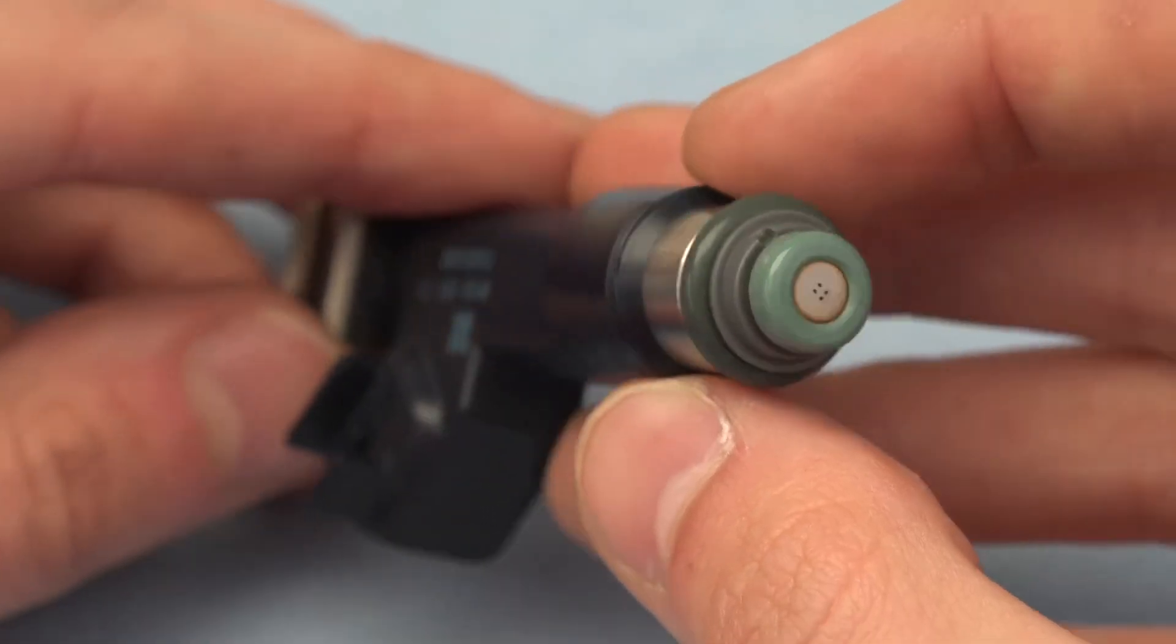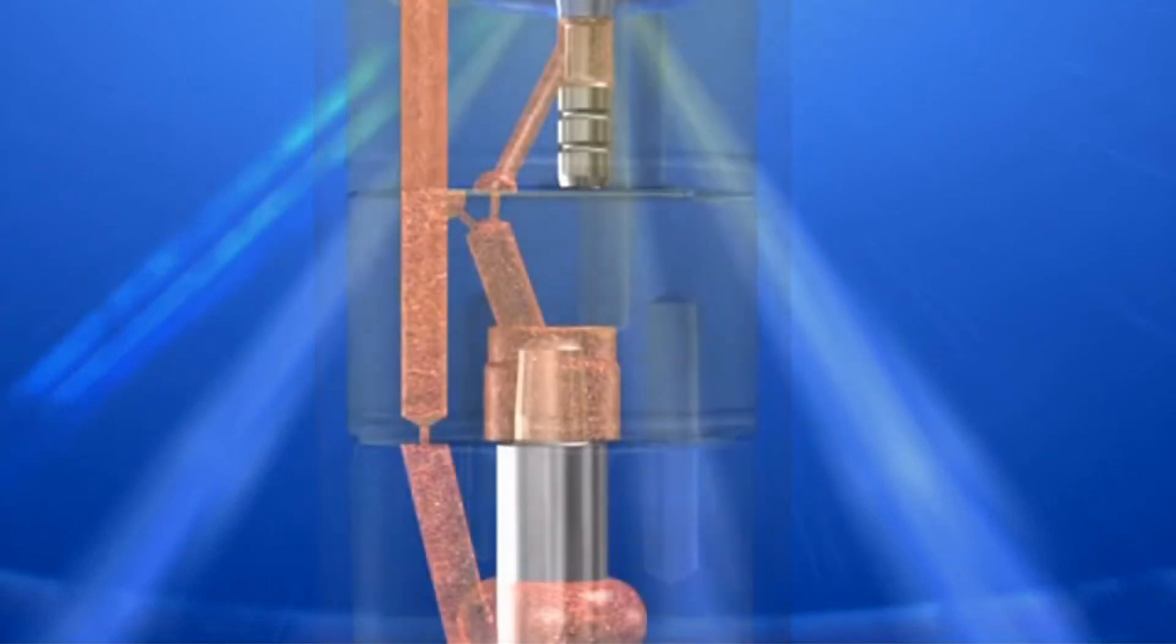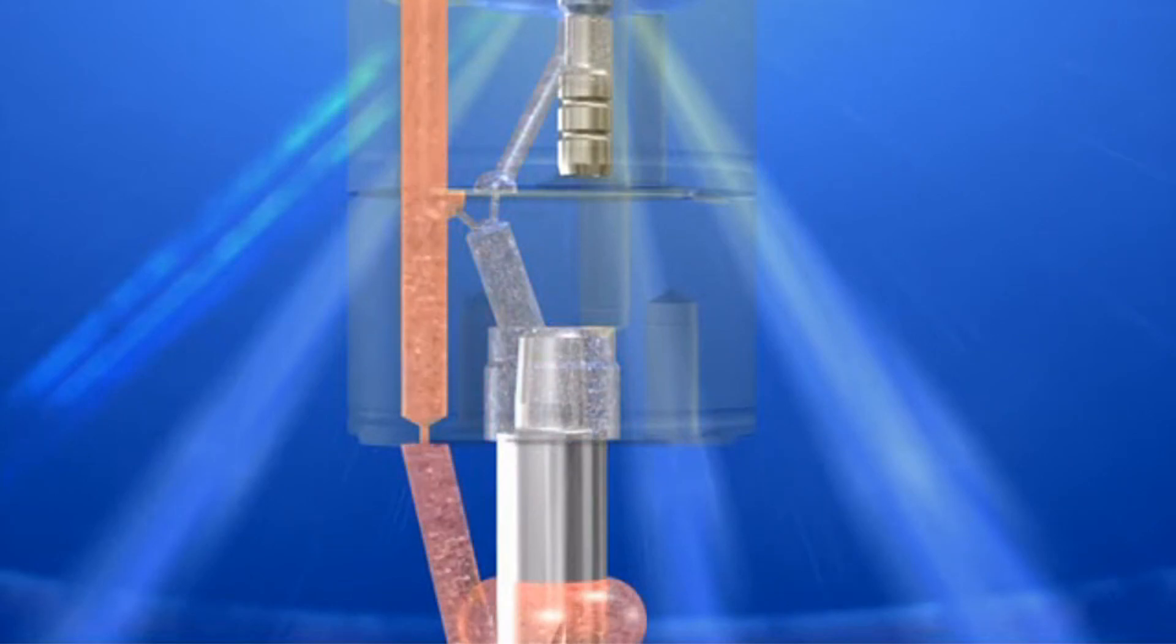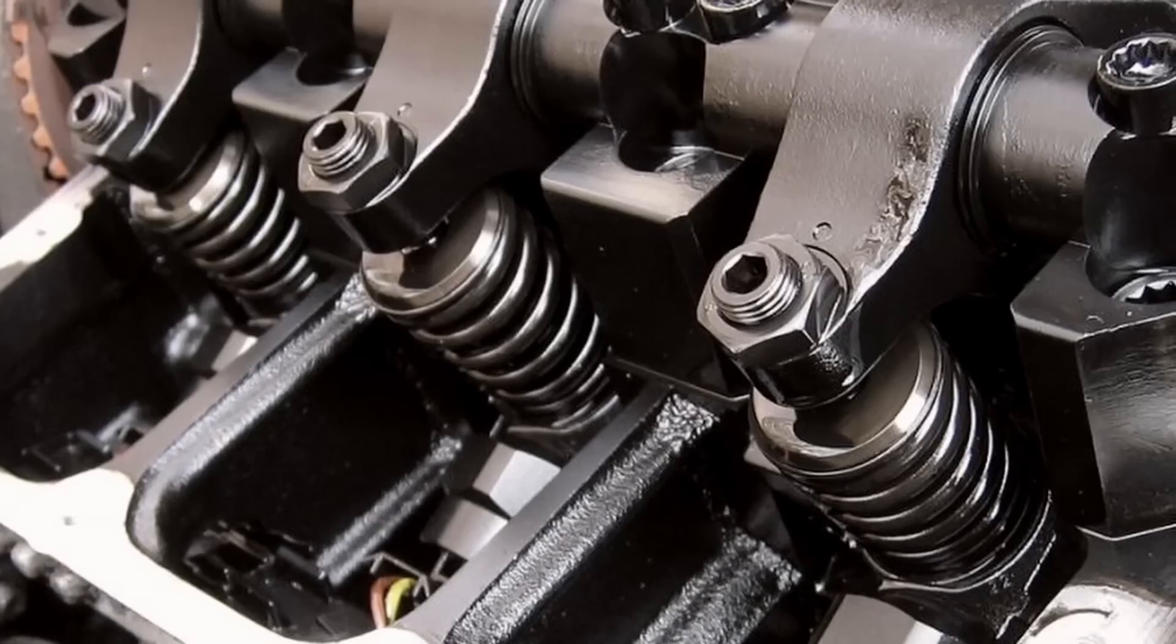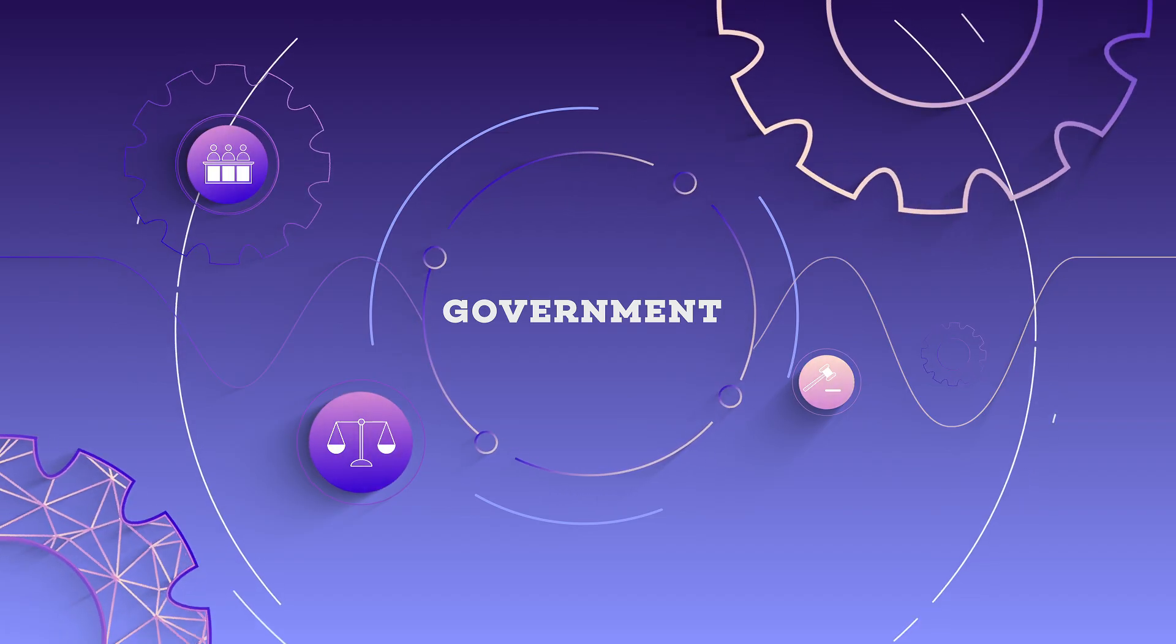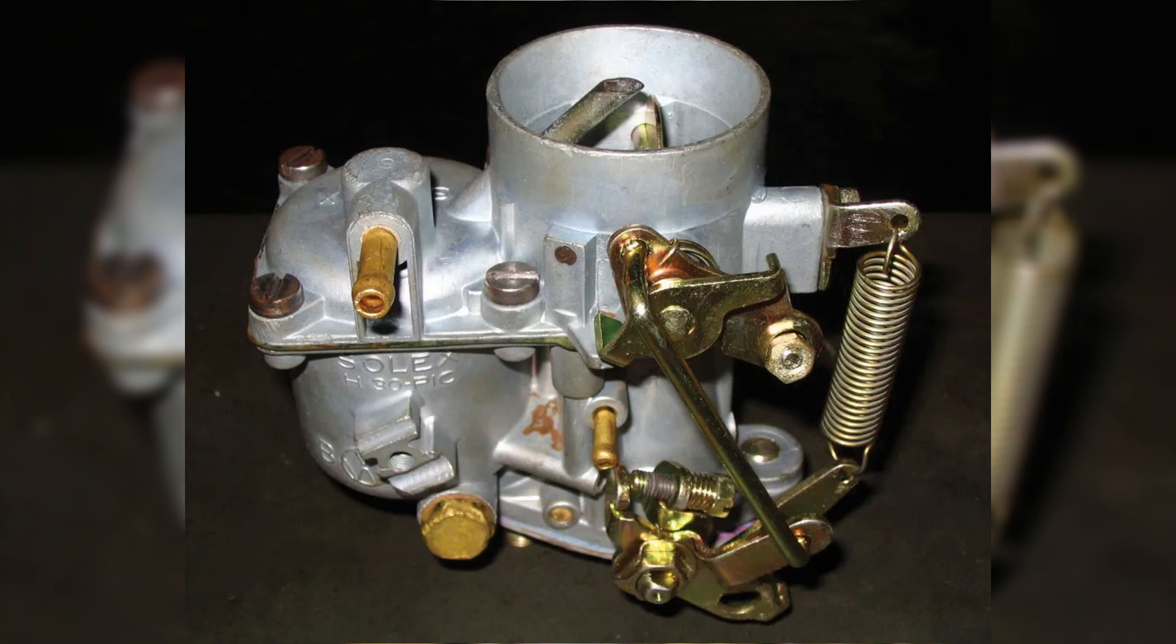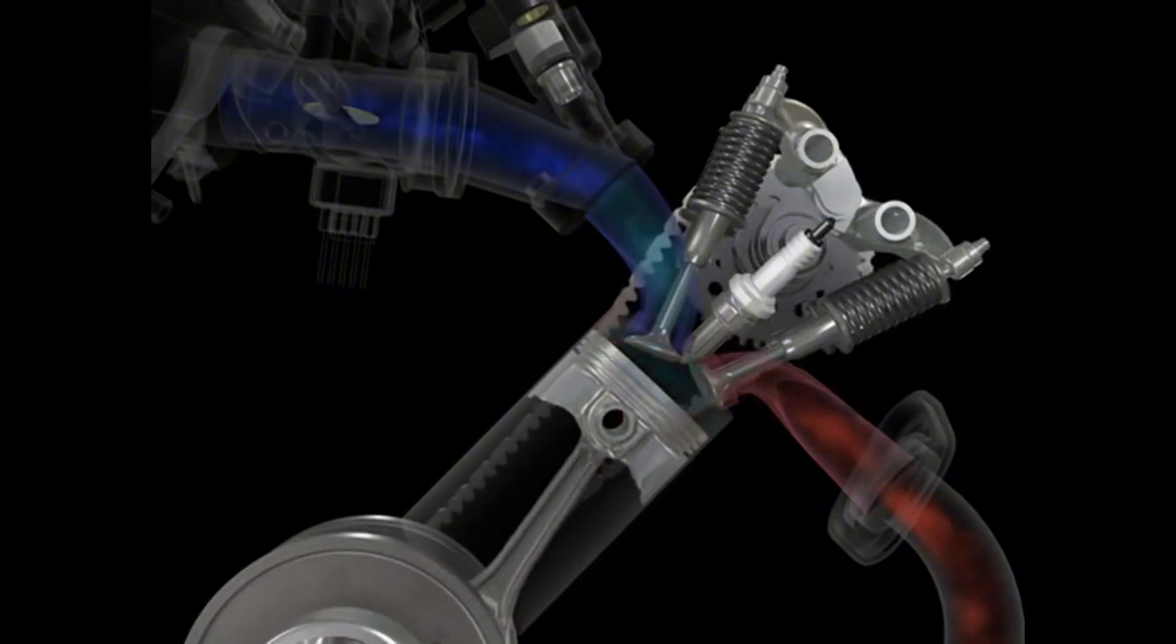Fuel injection, on the other hand, plays by the modern rulebook. It delivers exact air fuel ratios, reduces unburned hydrocarbons, and optimizes combustion in every cylinder. That means fewer tailpipe emissions, better fuel economy, and engines that actually meet global standards. And governments? They've noticed. That's why over the years, carburetors began disappearing, not because they failed, but because the world around them changed.